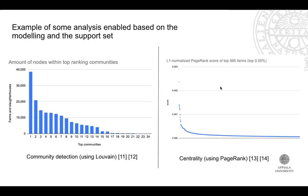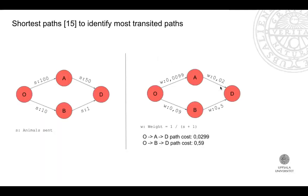Other analyses used centrality measures — PageRank and eigenvector centrality — to identify the most central farms or slaughterhouses. Another analysis used shortest paths to identify the most transited paths. If an origin farm sends 100 animals to an intermediate farm, which sends 50 onwards, shortest path algorithms reveal not just the number of possible animals, but the most traveled routes between a given farm and a farm or slaughterhouse.